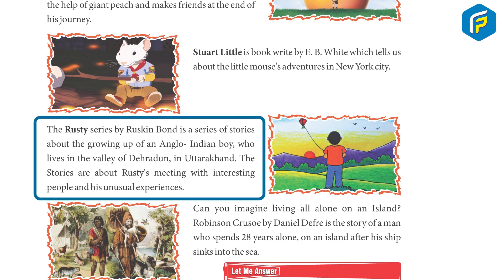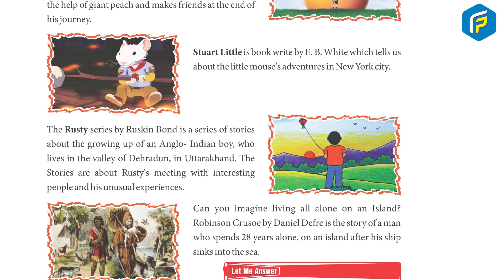The Rusty series by Ruskin Bond is a series of stories about the growing up of an Anglo-Indian boy who lives in the valley of Dehradun in Uttarakhand. The stories are about Rusty's meeting with interesting people and his unusual experiences.